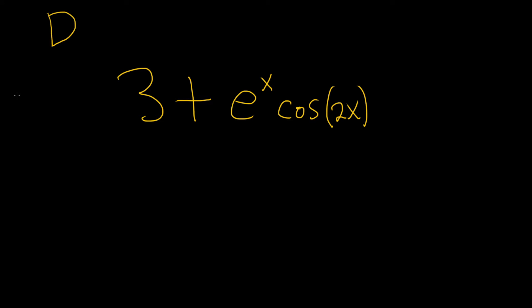By the way, by an annihilator we mean an operator such that when we apply it to our function, which we'll call y, the result is 0. So this is our y in this problem. So D will annihilate the 3.